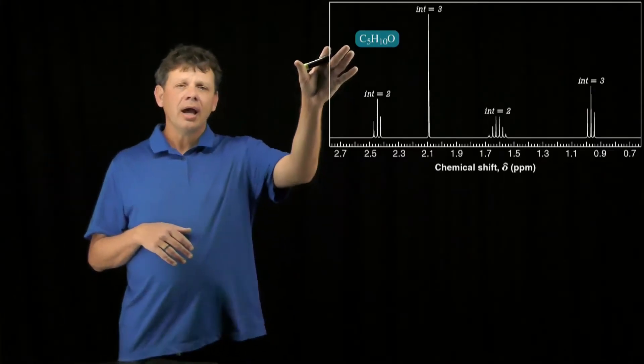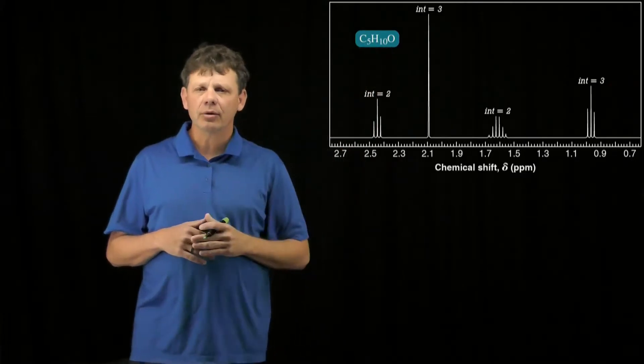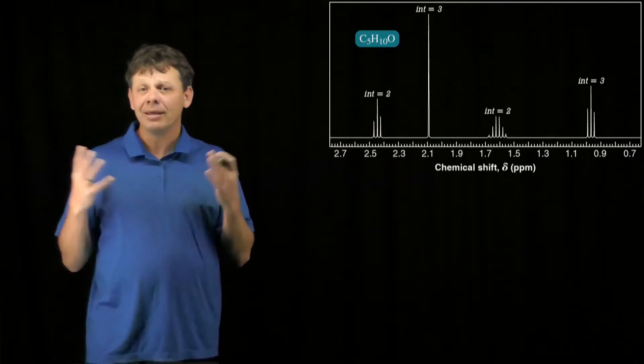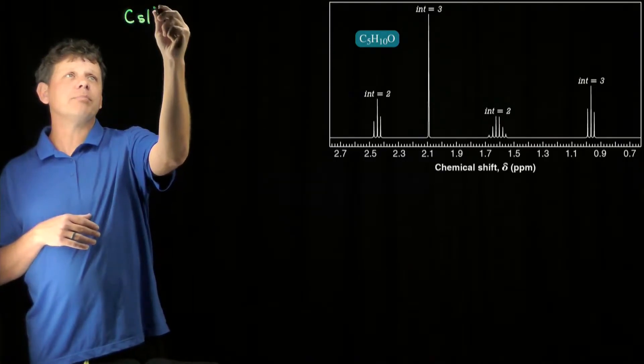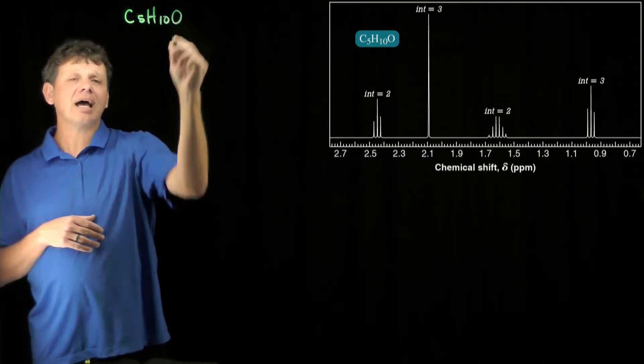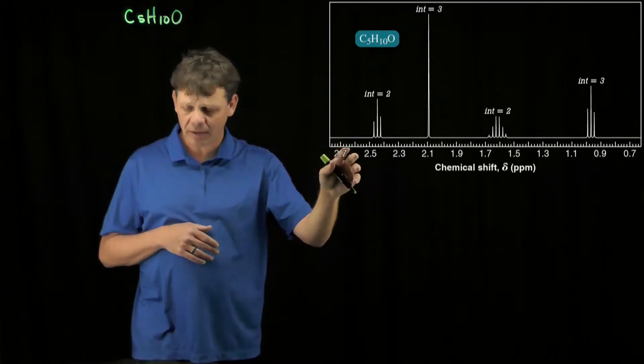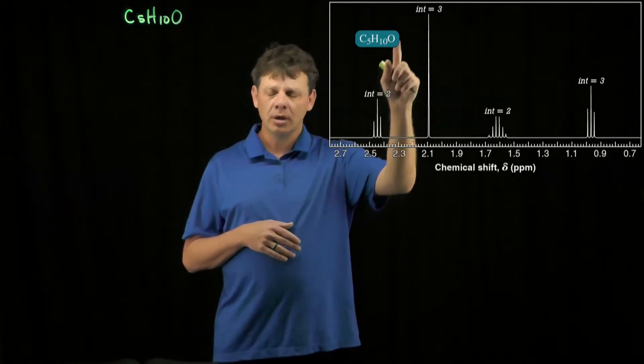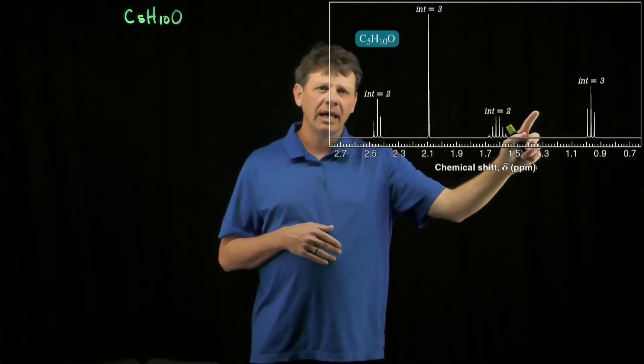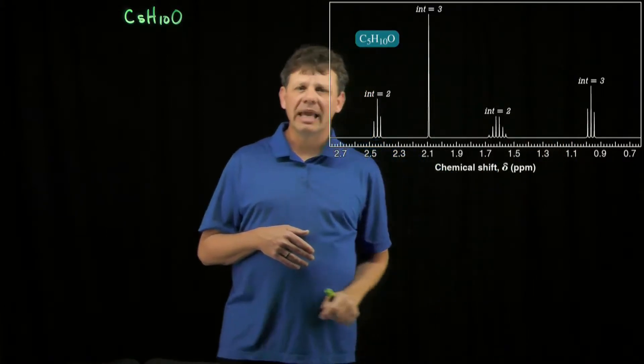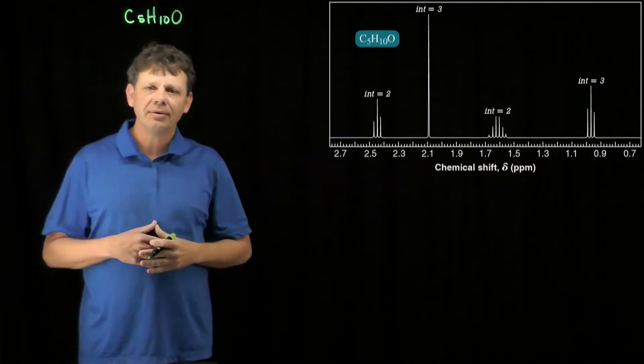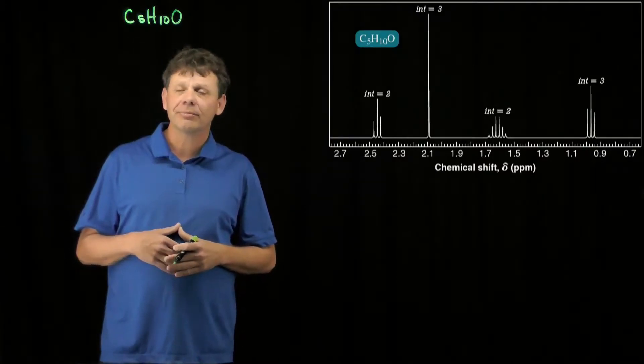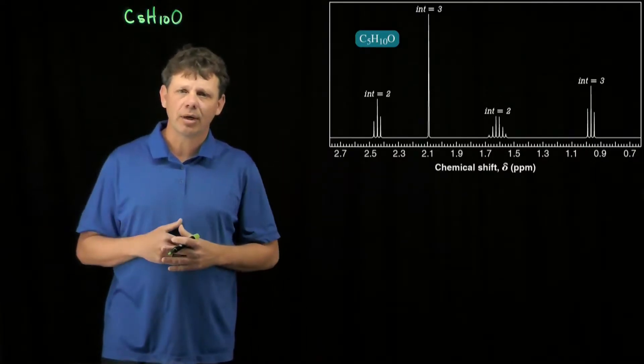Let's start. We always want to start with the molecular formula. It's C5H10O. We know that there are five carbons and we're going to be having 10 hydrogens. If you notice the integration values, we've got 2, 3, 2, and 3. They're going to add up to 10, so all 10 hydrogens are represented in this spectrum. We should have five carbons and one oxygen.